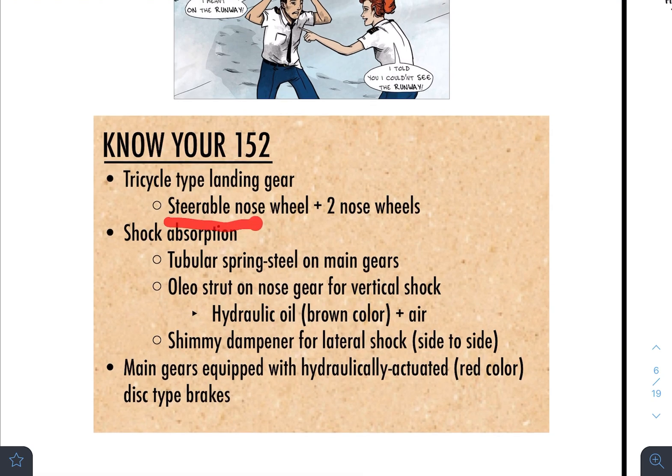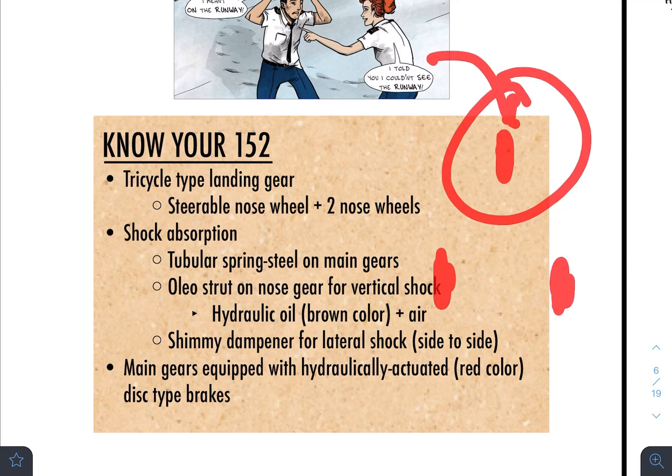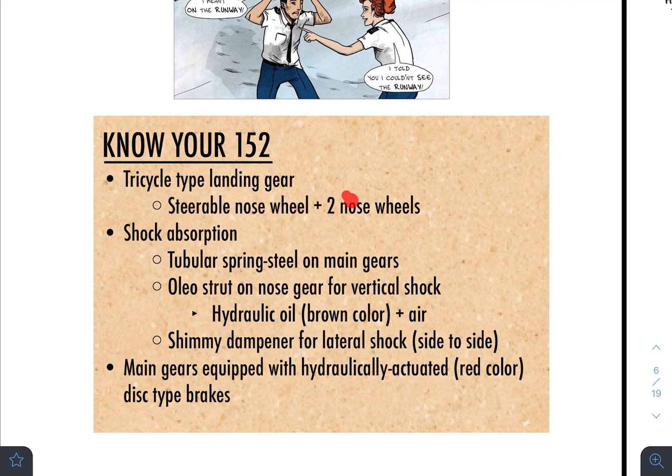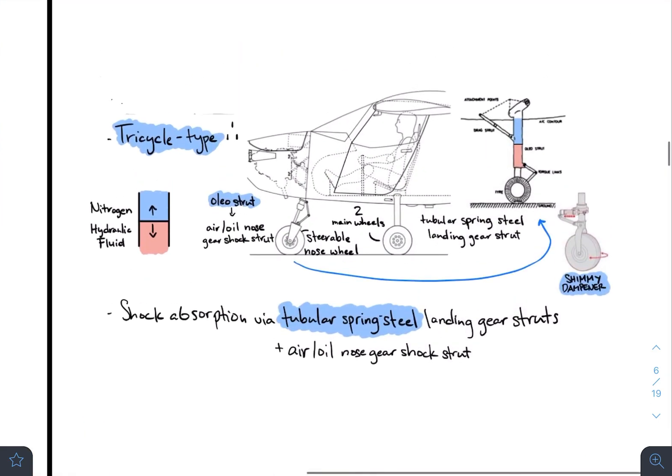And we have a steerable nose wheel, which is going to be the front over here. That you can steer, move it to the left, move it to the right, make it go straight. And the nose wheels, there's actually a typo. We'll fix that later. Are the main gears. And these are the things over here.